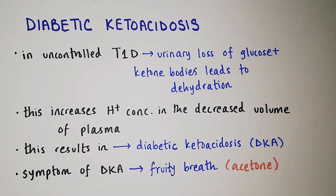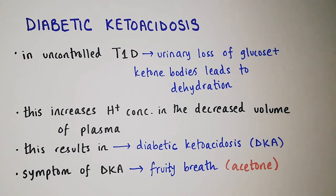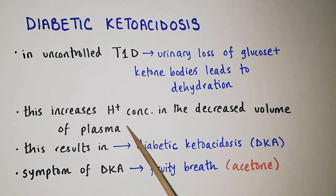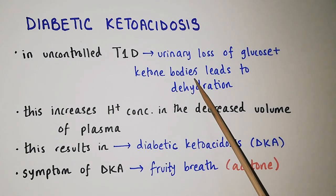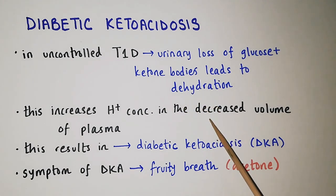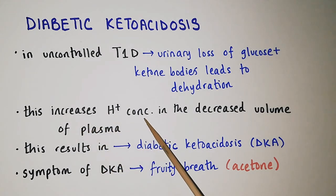Now let's discuss diabetic ketoacidosis. In uncontrolled type 1 diabetes, the concentration of ketone bodies increases in our blood. This leads to urinary loss of glucose and ketone bodies, which ultimately causes dehydration. Dehydration decreases plasma volume, which increases the proton concentration in the blood. This results in diabetic ketoacidosis. A key symptom is fruity breath, which indicates the presence of acetone. Ketone bodies are acidic and readily donate protons, and because dehydration reduces plasma volume, the proton concentration increases further.